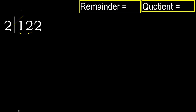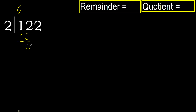2 multiplied by 7 is 14 — 14 is greater. Multiplied by 6 is 12 — 12 is not greater. 12 minus 12 is 0. Next.